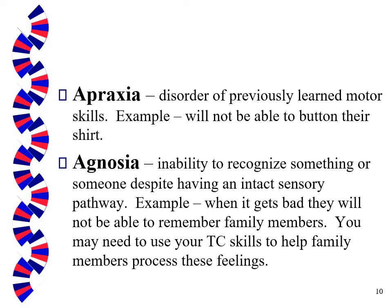We have apraxia — a disorder of previously learned motor skills. The example given is that they're not able to button their shirt, and what's important is that there's nothing wrong with their fingers or their eyesight — it's due to what's going on in their brain. Then we have agnosia, which is one of the more painful things for people in the life of someone with dementia — the inability to recognize something or someone you know. Again, there's nothing wrong with their eyes; they can't recognize because of what's happening in the brain. When it gets very bad, they won't be able to recognize family members.